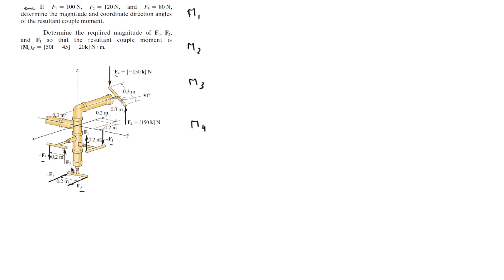Now moment 1, moment 2, and moment 3 are very easy to find. You know the distance between them and you know the magnitude of the forces. So the moment on F1 is equal to 100 times 0.2, which gives 20 newton meters of moment. By the right-hand rule, it's going in the negative J direction, so moment 1 is negative 20 J.